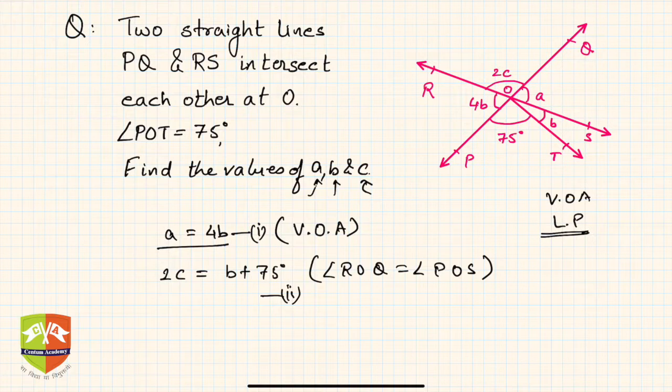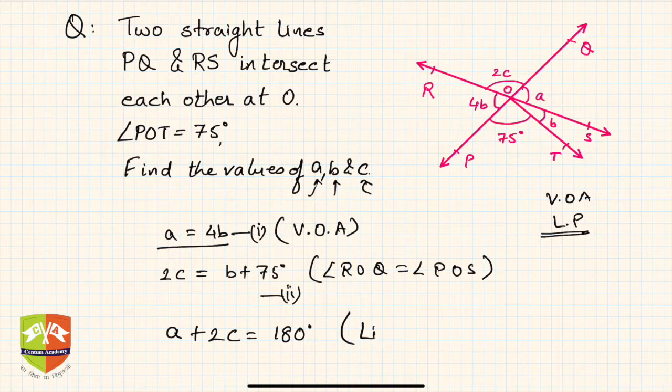One more information you can see here is a plus 2c is equal to 180 degrees. Why? This is because of linear pair. RS is the line and OQ is the ray on the line, so a plus 2c is 180 degrees.